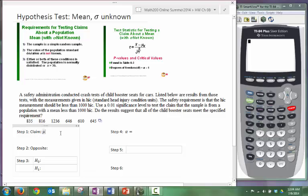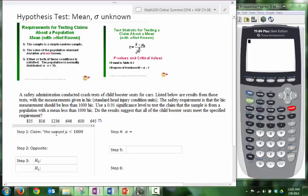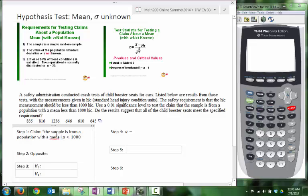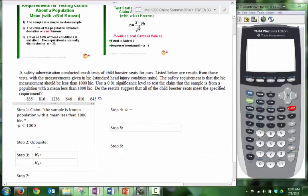Our claim is about mu, and we want that to be less than 1,000. The claim states that the sample is from a population with a mean less than 1,000 HIC. The complete opposite would be mu is greater than or equal to 1,000.